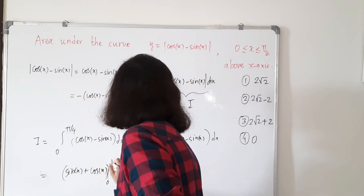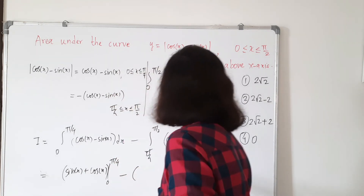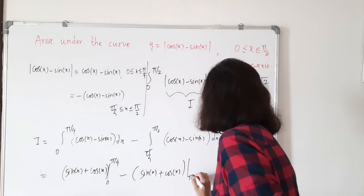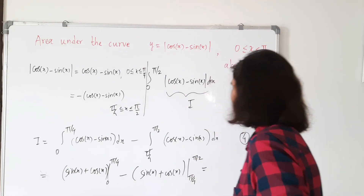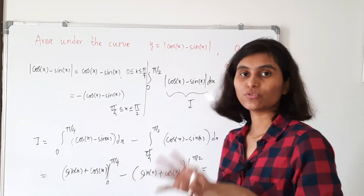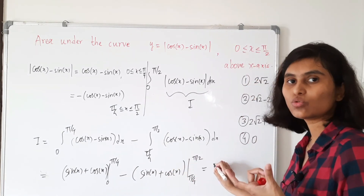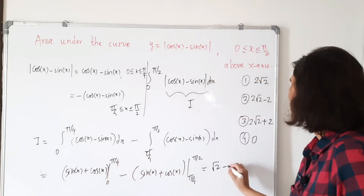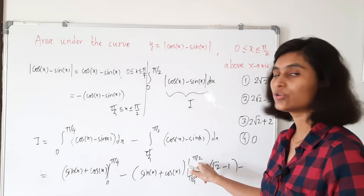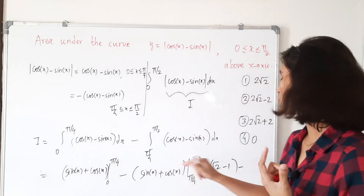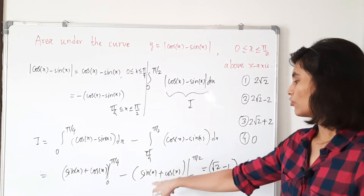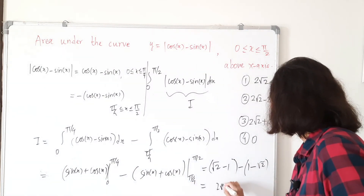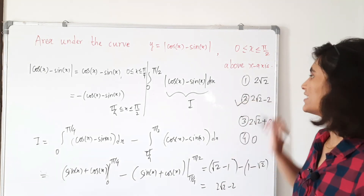Evaluating: the integral of cos x is sin x and of sin x is minus cos x, so the first part gives [sin x + cos x] from 0 to π/4. The second part gives minus [sin x + cos x] from π/4 to π/2. At π/4, sin and cos are both 1/√2, so sin(π/4) + cos(π/4) = √2. At 0: sin 0 + cos 0 = 1. At π/2: sin(π/2) + cos(π/2) = 1. This gives (√2 − 1) + (√2 − 1) = 2√2 − 2. So the answer is 2√2 − 2.